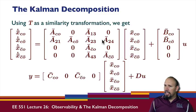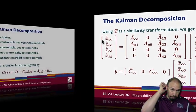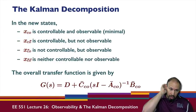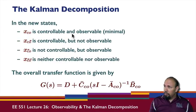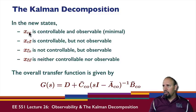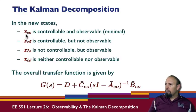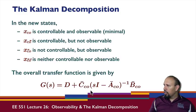We get something of this block form, where the different x's lie in their respective subspaces: the controllable-observable part, the controllable but not-observable part, the not-controllable but observable part, and the neither controllable nor observable part. Now, although we have all these states, the overall transfer function is given only by the part that is both controllable and observable.